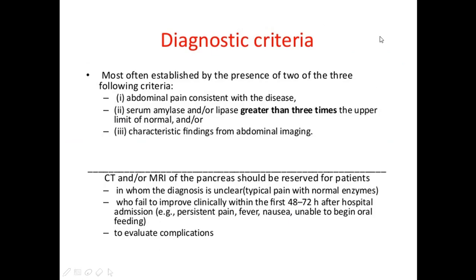How can we diagnose acute pancreatitis? The diagnosis is most often established by the presence of two of the following three criteria: abdominal pain consistent with the disease, serum amylase and/or lipase greater than three times the upper limit of normal, and/or characteristic findings from abdominal imaging.